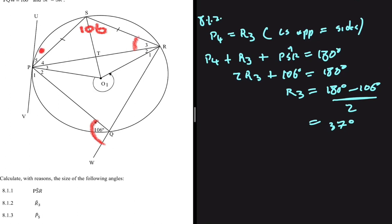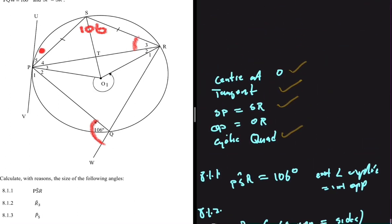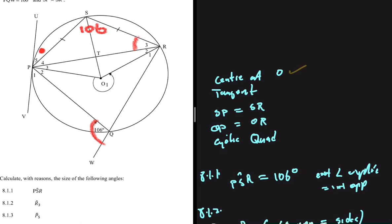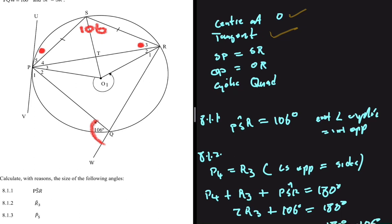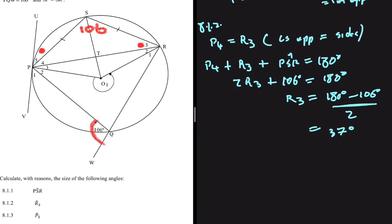Let's look at 8.1.3, finding the size of angle P5. Going back to our keywords: can we use the tangent? Yes — by the tan-chord theorem, angle P5 should equal angle R3. The angle between the tangent and the chord equals the angle subtended by that chord on the circumference of the circle.